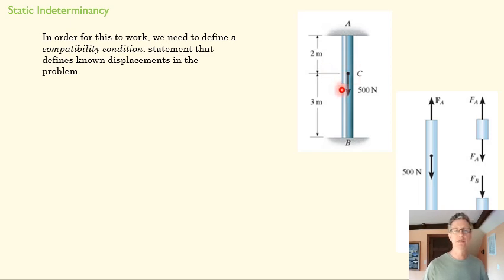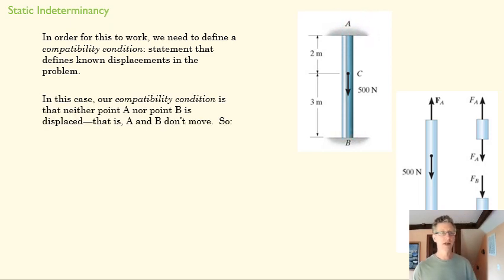Where do we have a known displacement? We don't know the displacement here, but we do here. That's not going to move. We're assuming that this support is immovable, and that's not going to change. And so I can write the delta AB, the distance between A and B is not going to change. It's going to be zero.